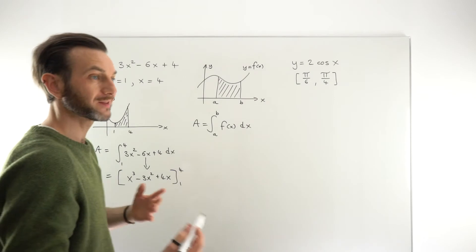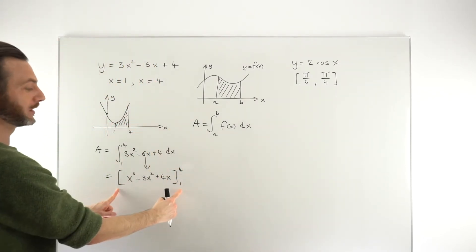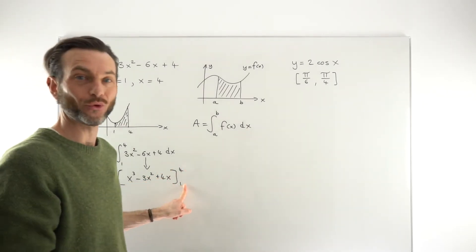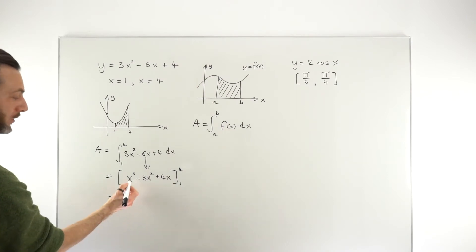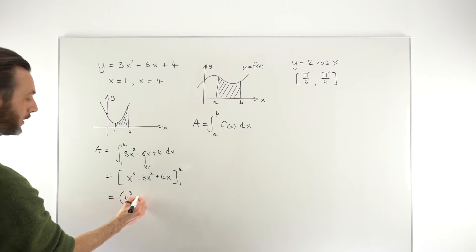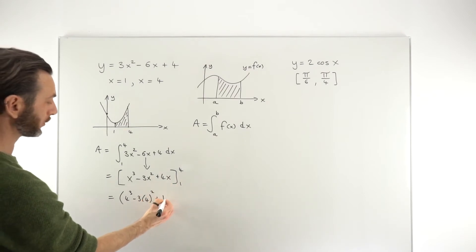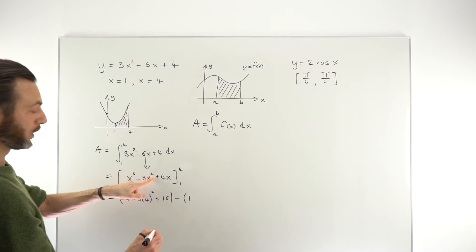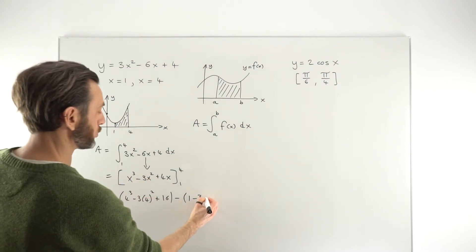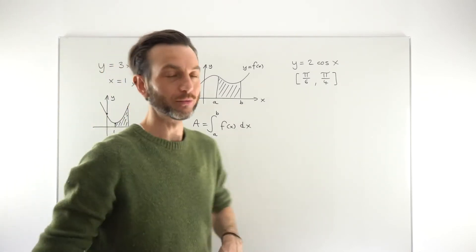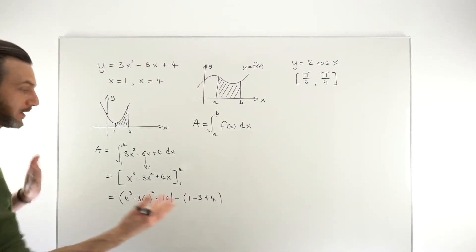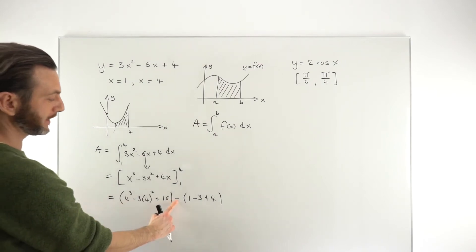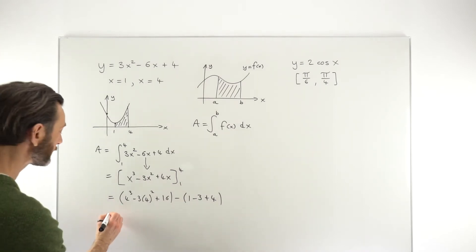Then we just go ahead and substitute in the limits for x, starting with the upper limit. Good practice to use a bracket for these. So we're putting 4 in to give us 4 cubed minus 3 times 4 squared plus 4 times 4, going straight to making that 16. Then we subtract — it's always a subtract — with the lower limit subbed in. So 1 cubed is just 1, 1 squared times 3 is minus 3, and 4 times 1 is just 4. This is called the fundamental theorem of calculus — one of the big main results in calculus, which links together integration and differentiation. This rule tells us how to evaluate a definite integral: upper limit subbed in first, minus the lower limit substituted in.